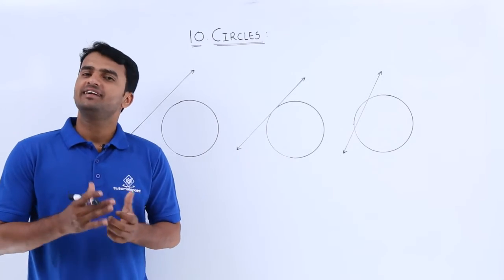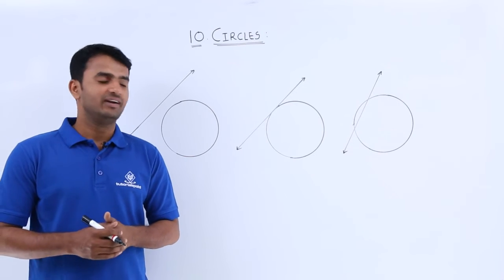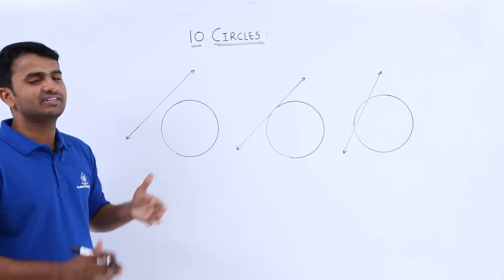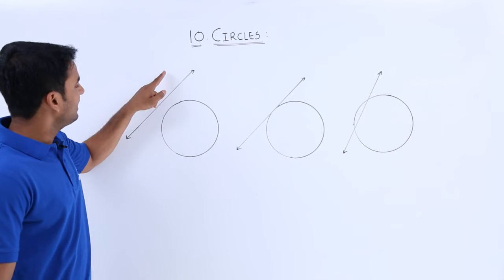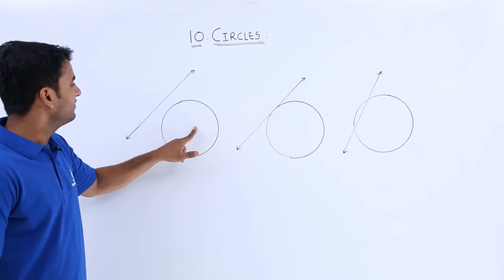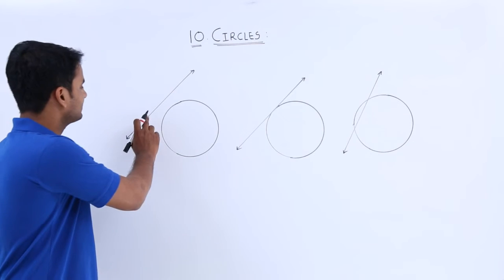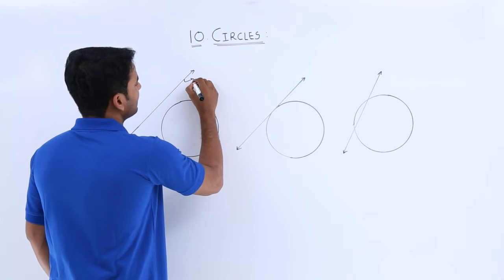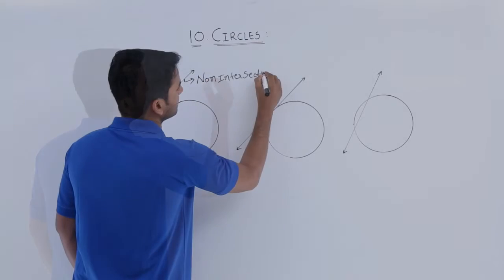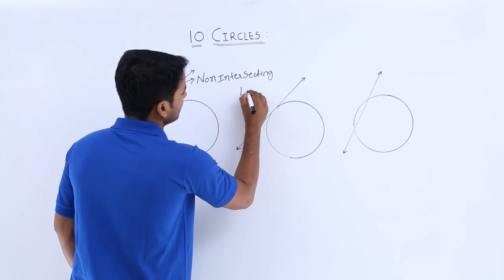Now, let us see the different situations that arise when a circle and line are given. Here, in our first case, a line and circle are given and there is no common point between this line and circle. For that reason, this line is considered as a non-intersecting line.